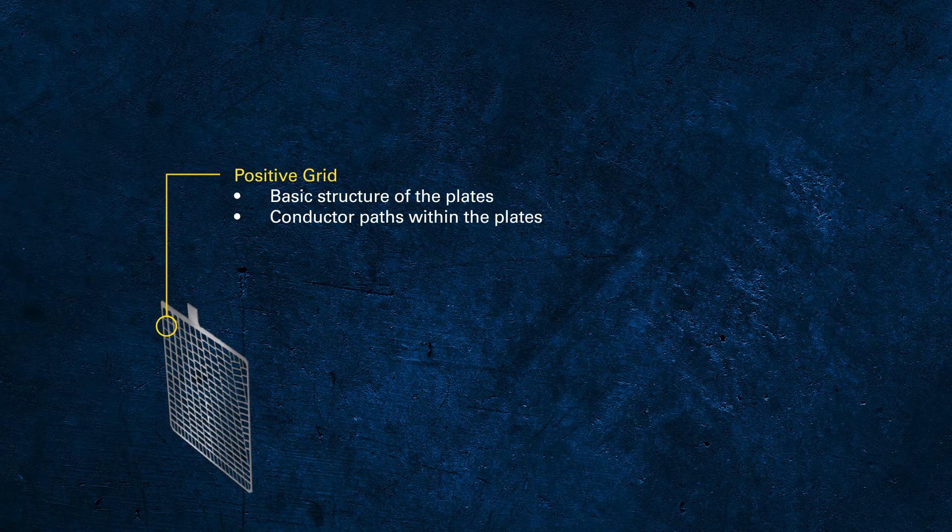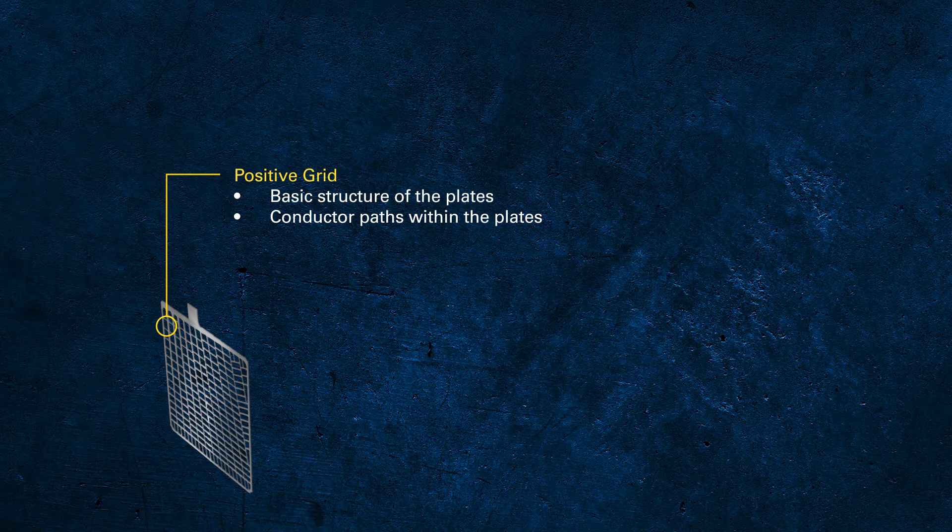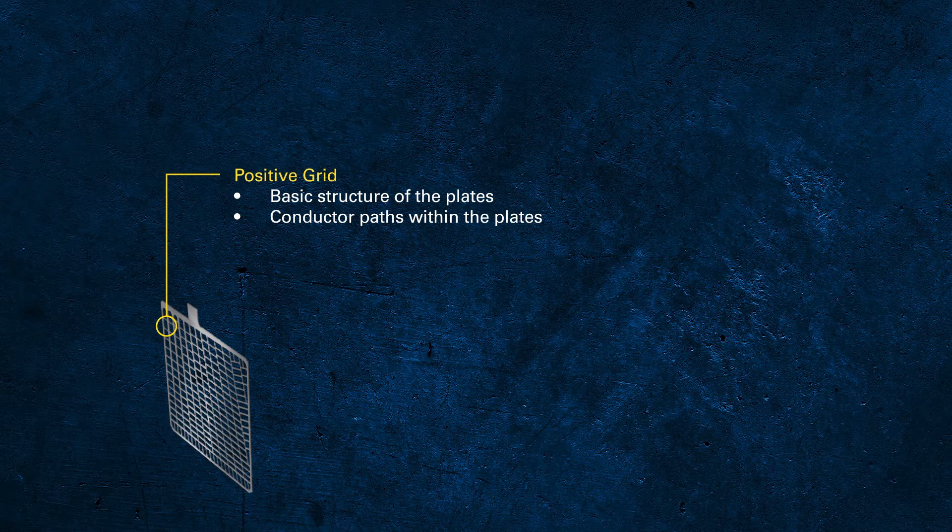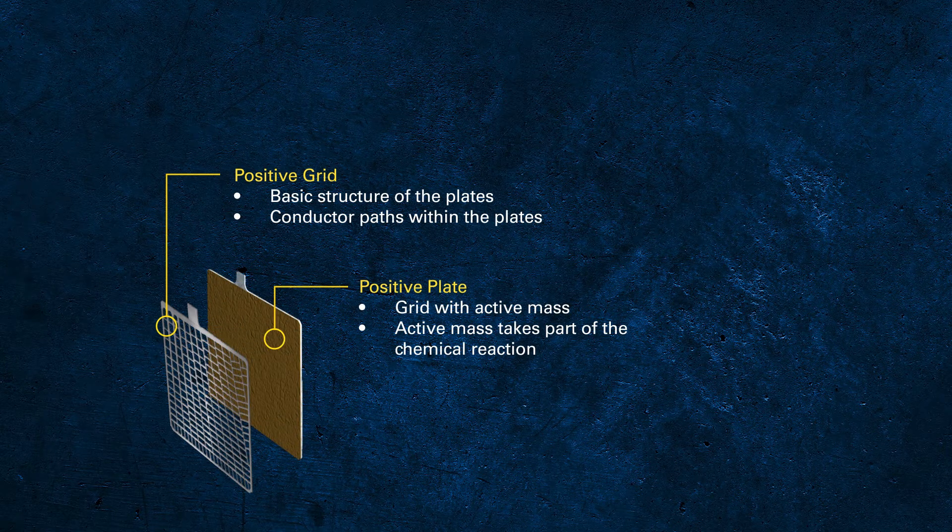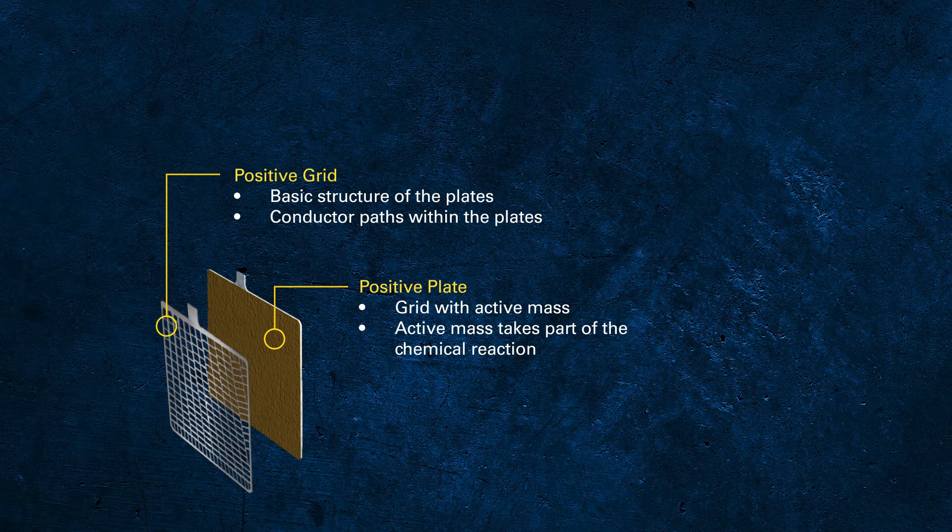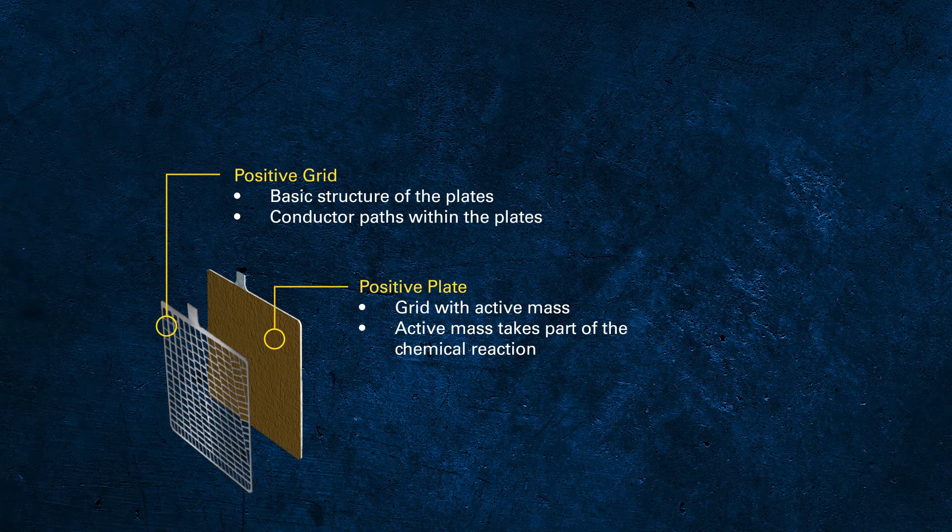As the grid is mainly made of lead, it carries the electrons going from the active mass to the lug or vice versa. The active mass contains the chemical elements needed for the reaction to deliver or take in electrical energy.